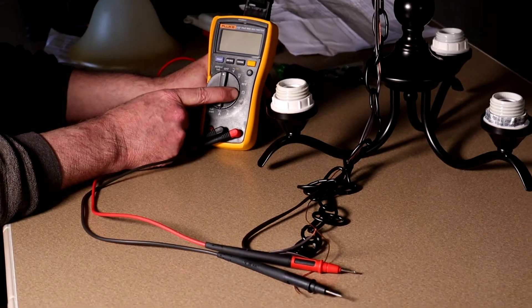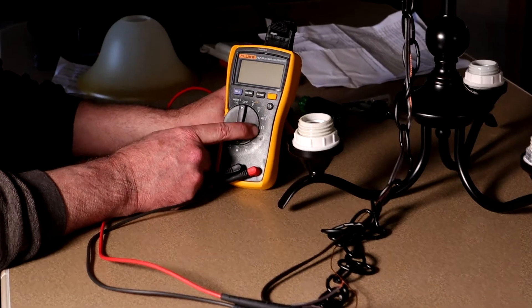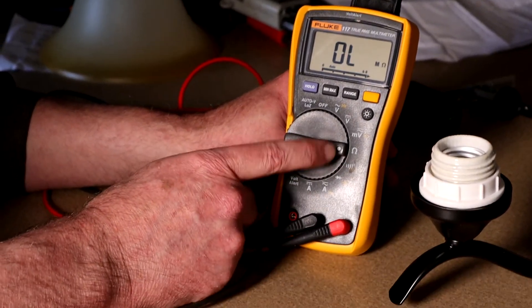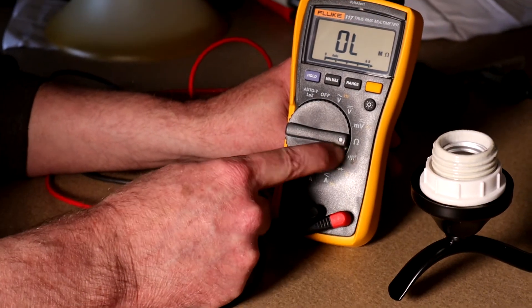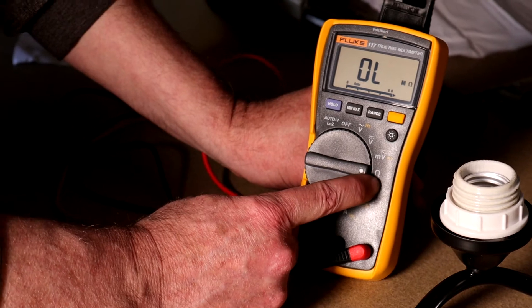We're going to select this symbol that looks like an ohm symbol. That's for continuity. So we're going to go to continuity scale on the meter, which is the upside down horseshoe looking ohm symbol here.